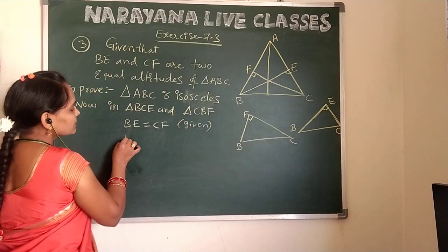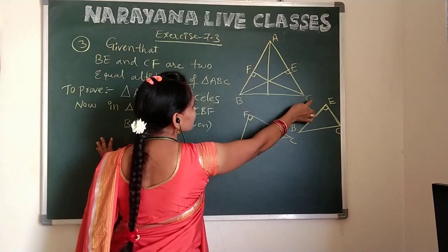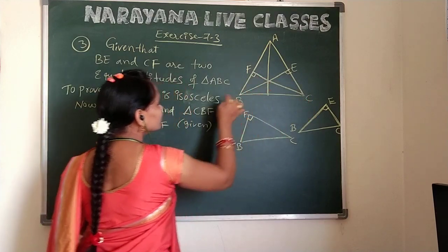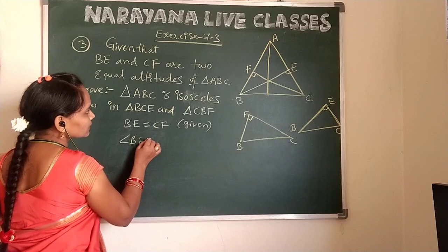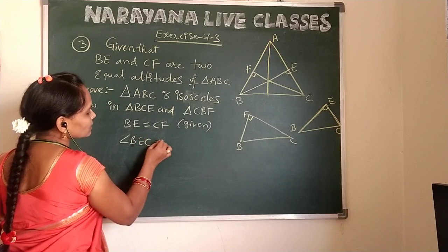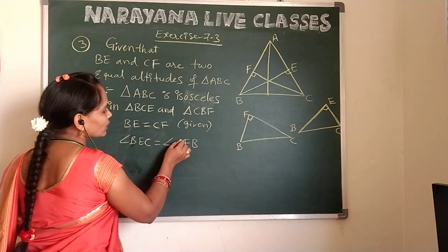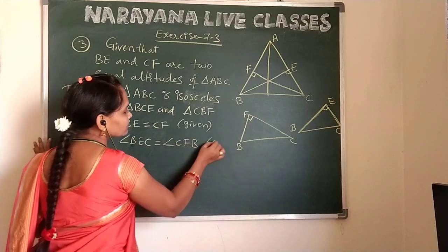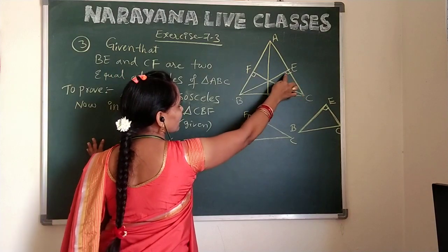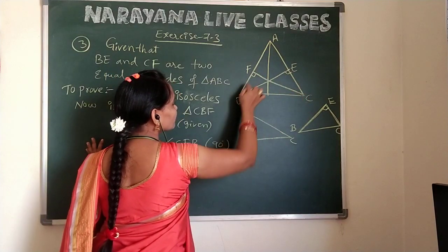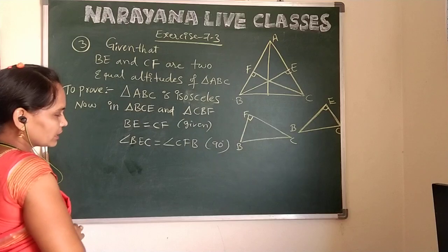Next, angle BEC is equal to angle CFB. Both are right angles — 90 degrees. Since BE is an altitude and CF is an altitude, both angles are right angles, so those are equal.